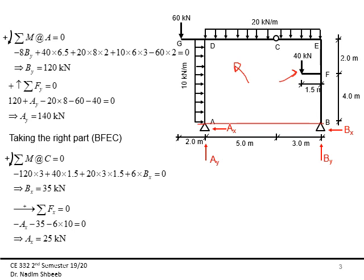This leads to minus 8 times By, since it's going in the opposite direction to what I'm assuming to be positive. Then I have this concentrated force of 40 kilonewtons, which is about 1.5 meters from the edge, meaning I have 5 plus half this distance, giving 6.5 meters. Plus for the distributed load, I have 20 times 8 times 4. And 10 times 6 times 3, minus 60 times 2 for the cantilever load. This gives By equal to 120 kilonewtons.